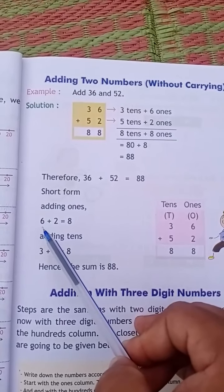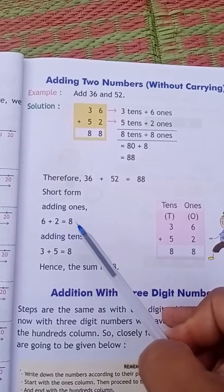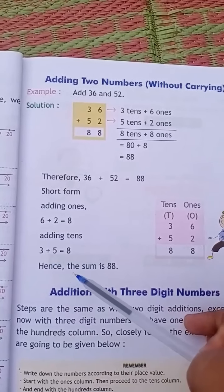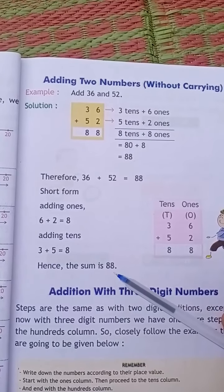Here we do 6 plus 2 is equal to 8. Adding tens, 3 plus 5 is equal to 8. Hence, the sum is 88.